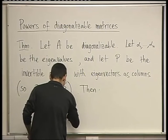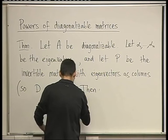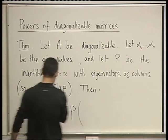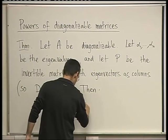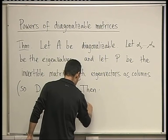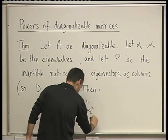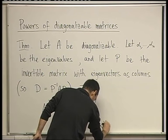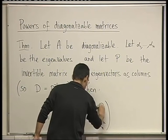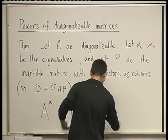A to the power K is P times D, the diagonal one, to the power K. So I'm going to write it like this. α₁ to the power K, α₂ to the power K, ..., αₙ to the power K, and zeros. And then P inverse.